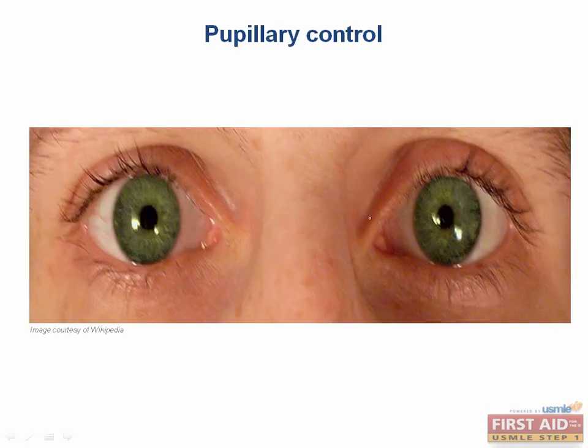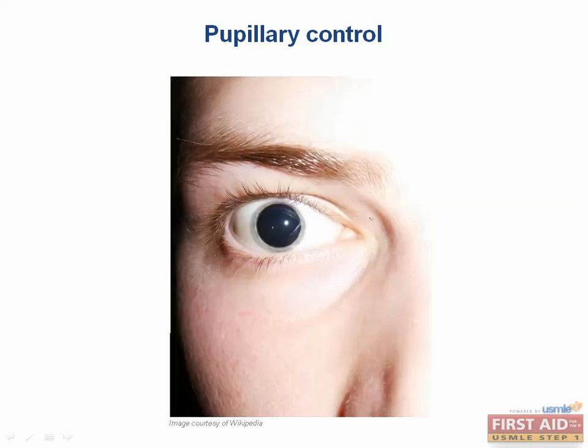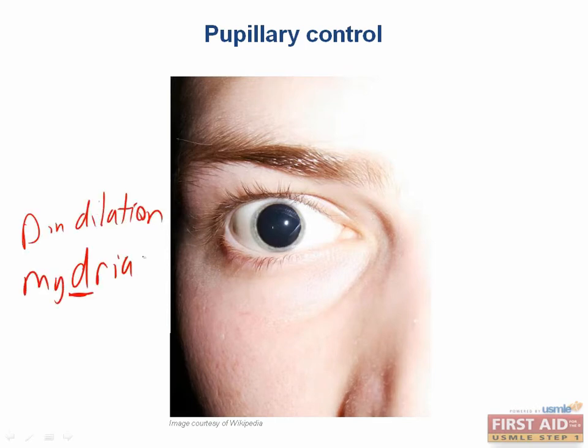There are two terms that are frequently confused: pupillary constriction, also known as miosis, and dilation, also known as mydriasis. One way to remember this is that the D in dilation is also in mydriasis.